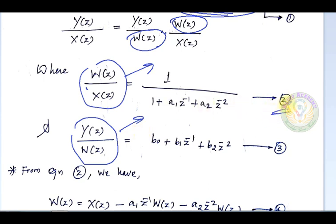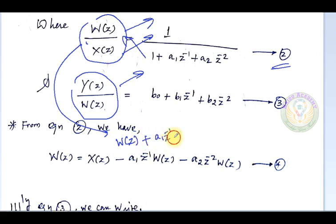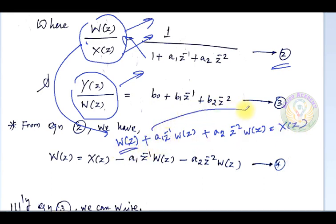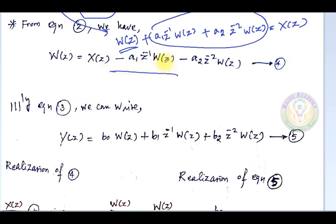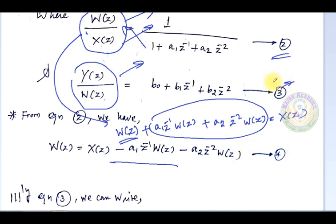Consider equation 2. Cross-multiplying gives: W(z) + a1·z⁻¹·W(z) + a2·z⁻²·W(z) = X(z). Taking W(z) to the left-hand side, we get: W(z) = X(z) − a1·z⁻¹·W(z) − a2·z⁻²·W(z). This is equation 4.